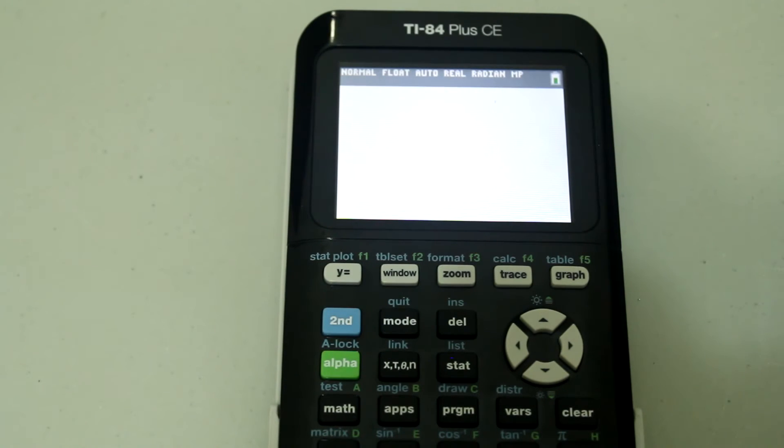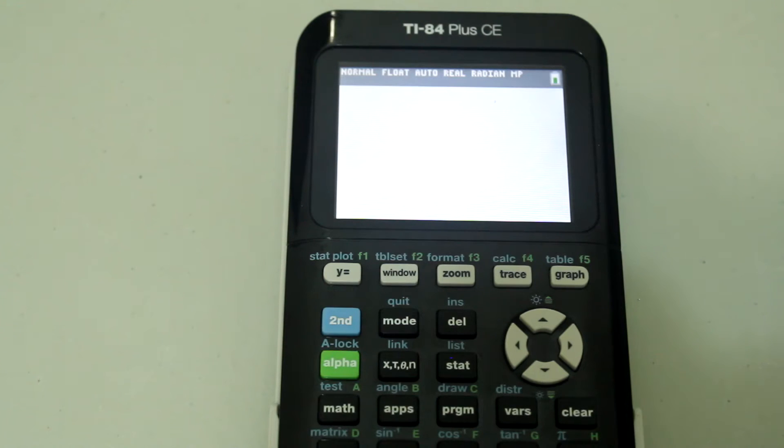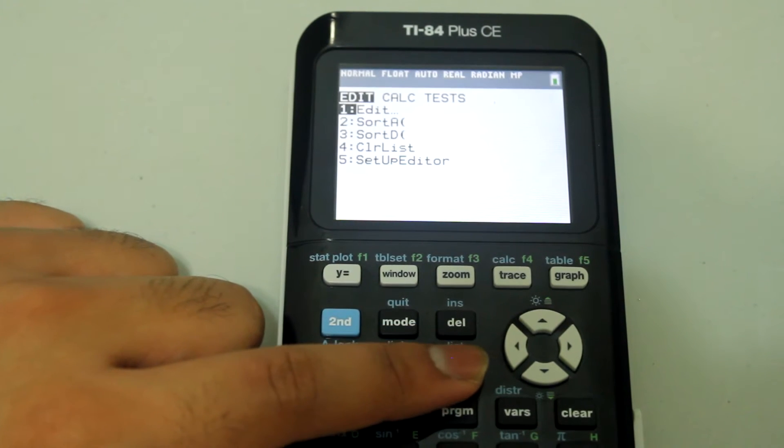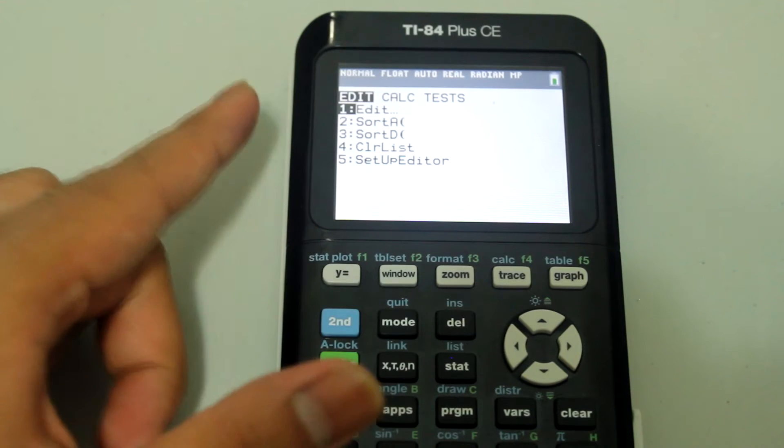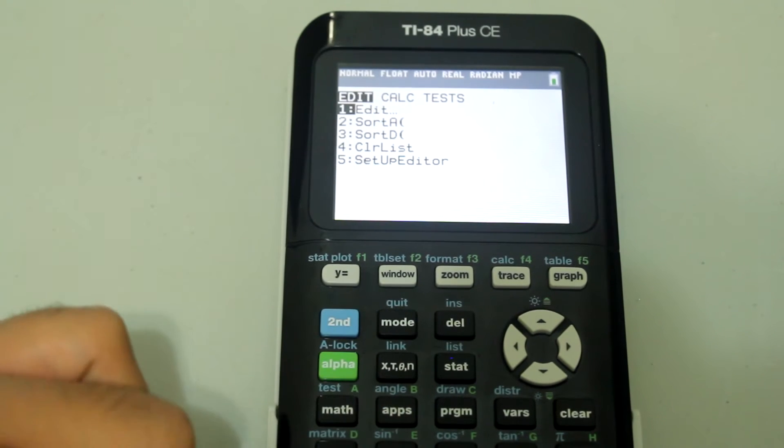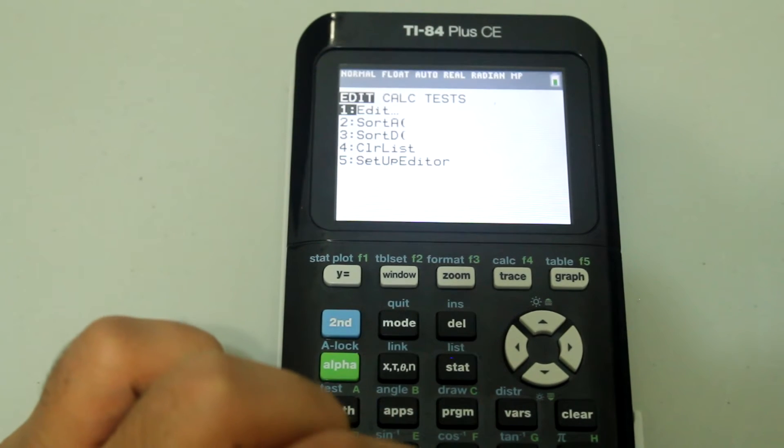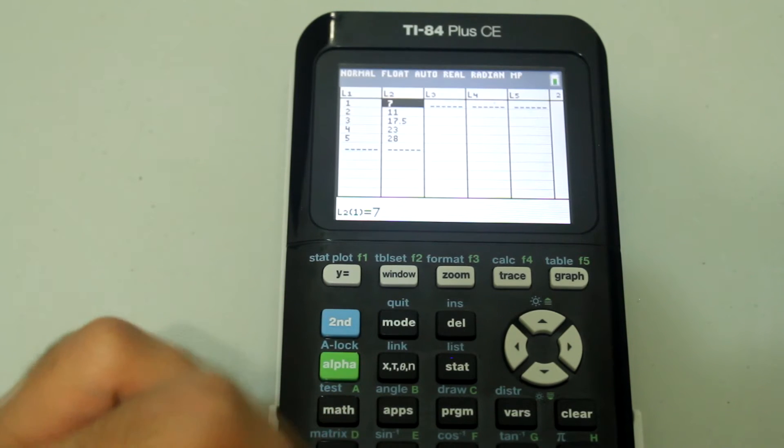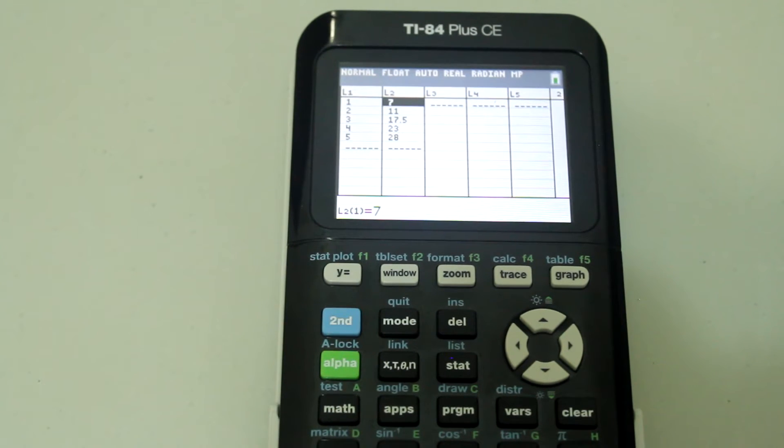Now, if we want to find the linear regression, we want to hit the STAT button. We can either use the number 1 button or hit enter to select edit, and after that we're taken to a few lists: L1, L2, L3 and so on.